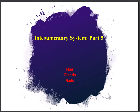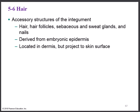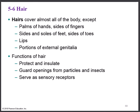In this final part of the integumentary system, we're going to focus on the anatomy and physiology of the accessory structures. As a review, the accessory structures include the hair, the hair follicle which makes the hair, the oil gland — now introducing a new term — the sebaceous gland. We'll also look at two types of sweat glands and finish with fingernails and toenails.